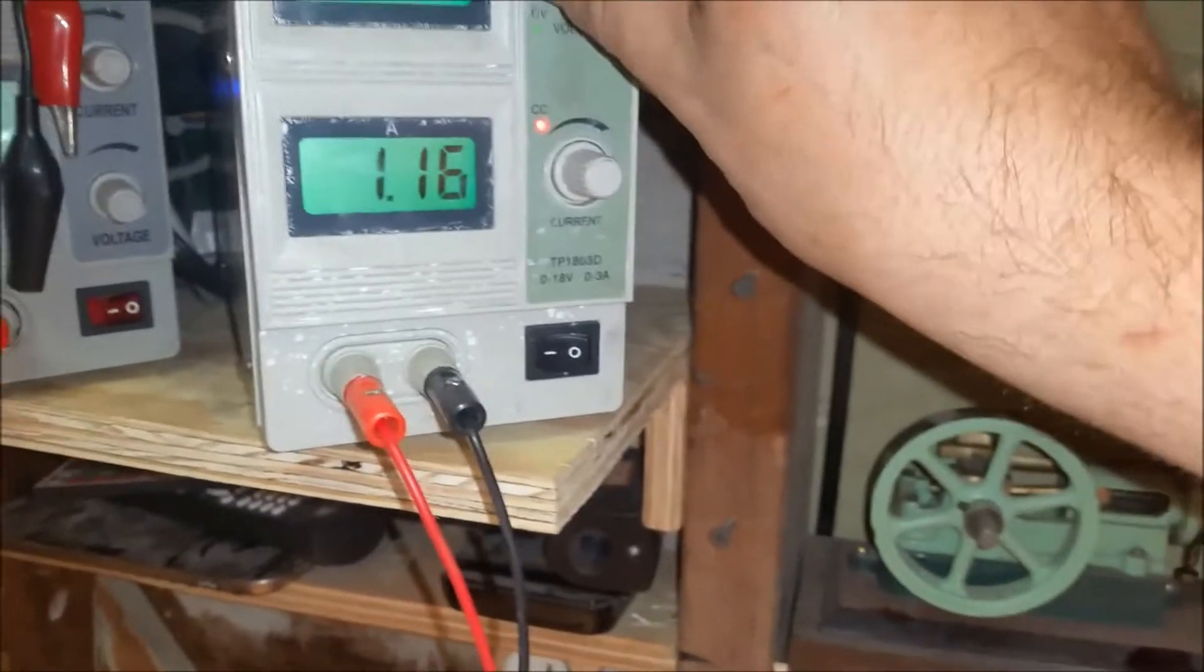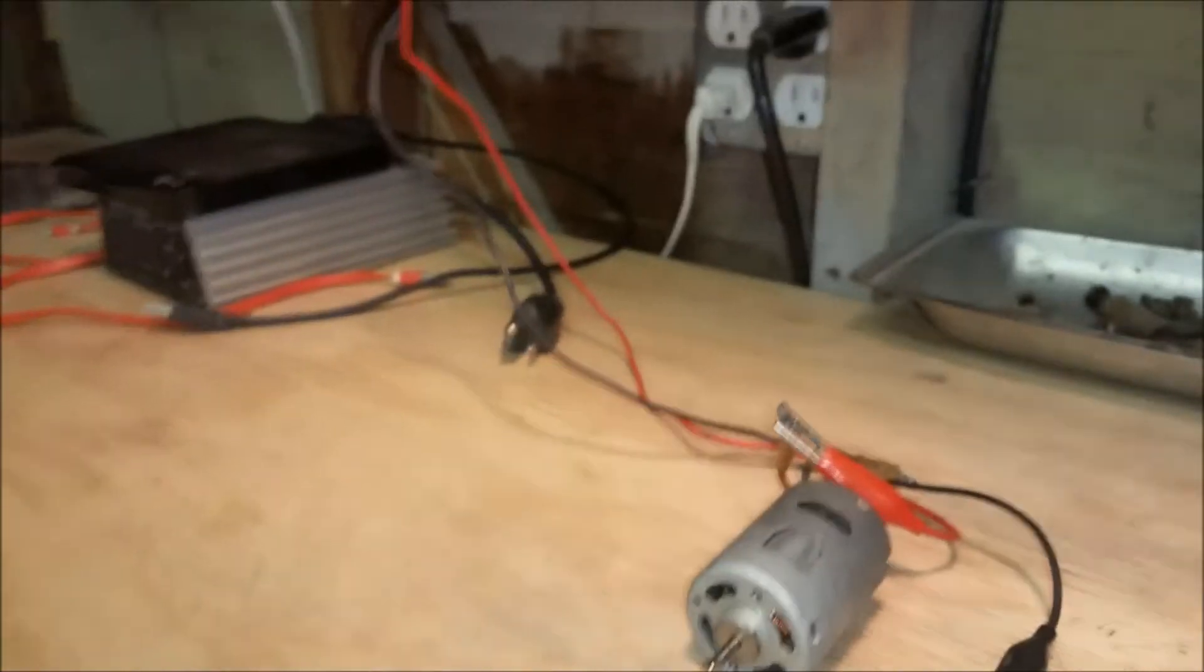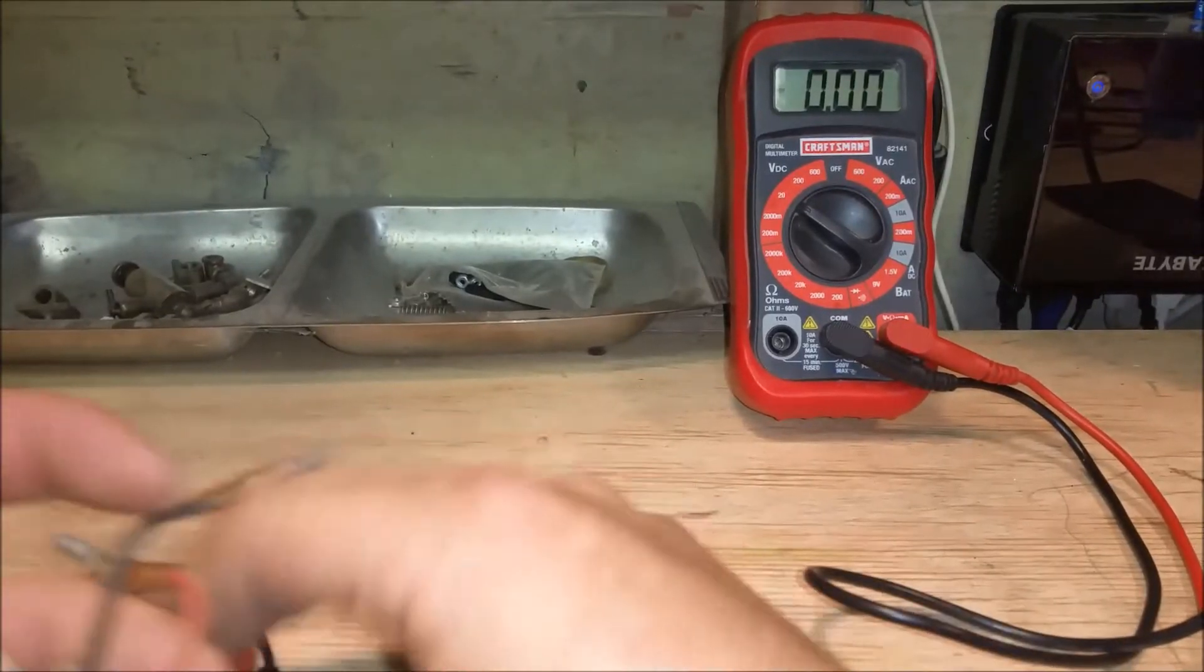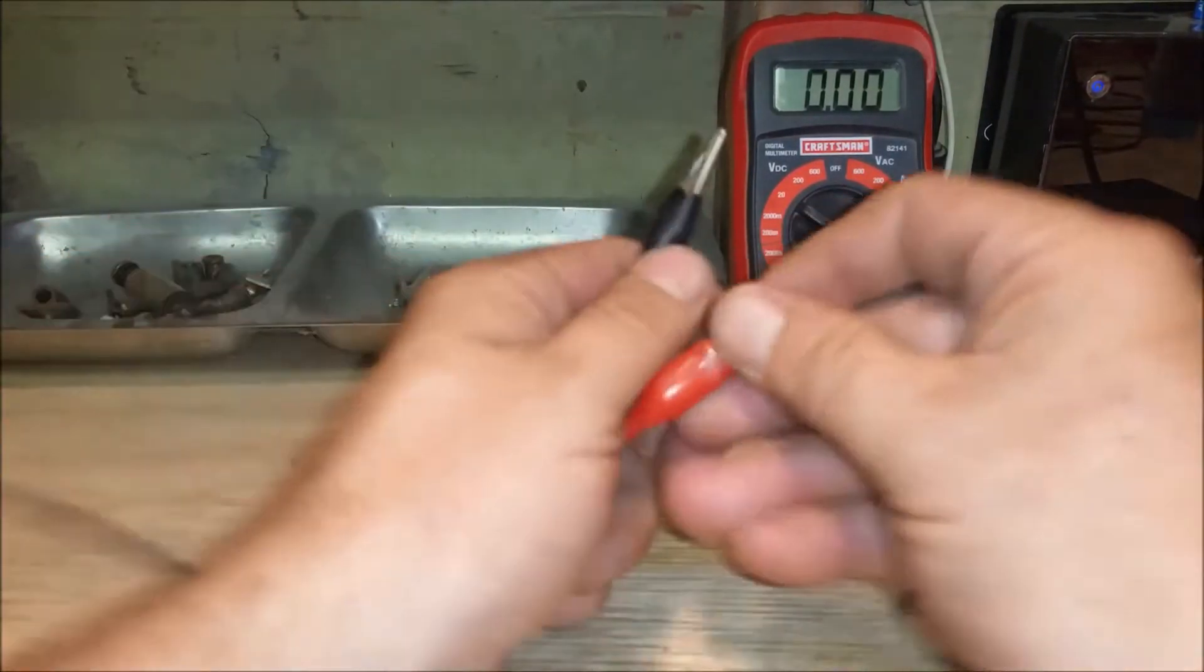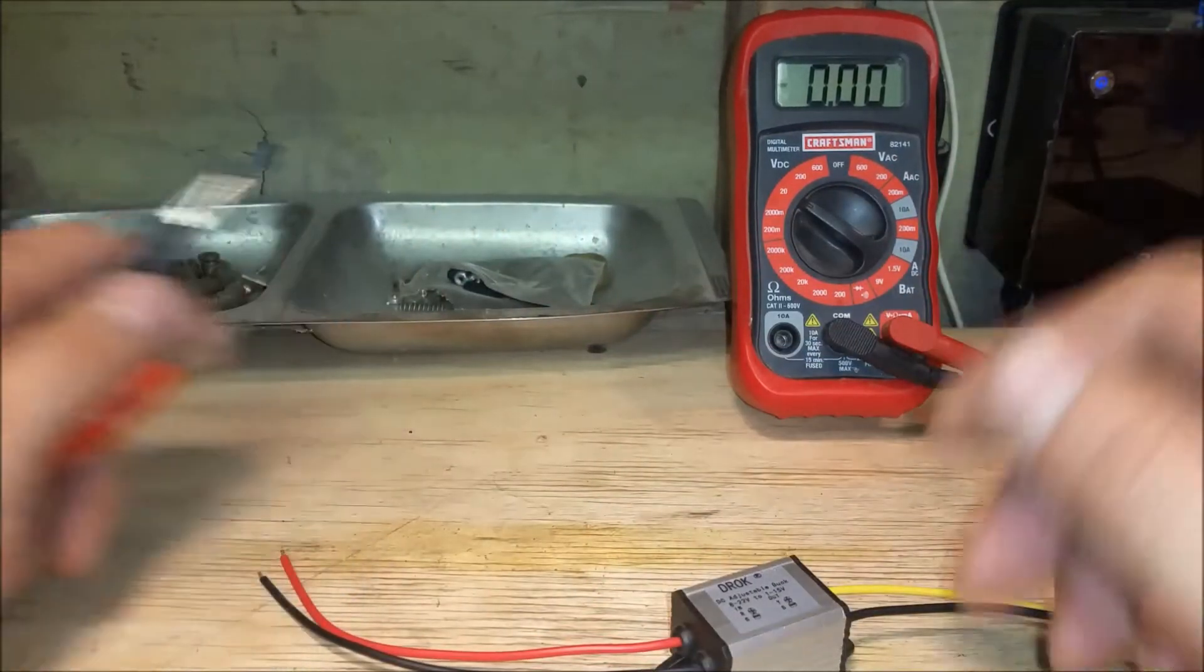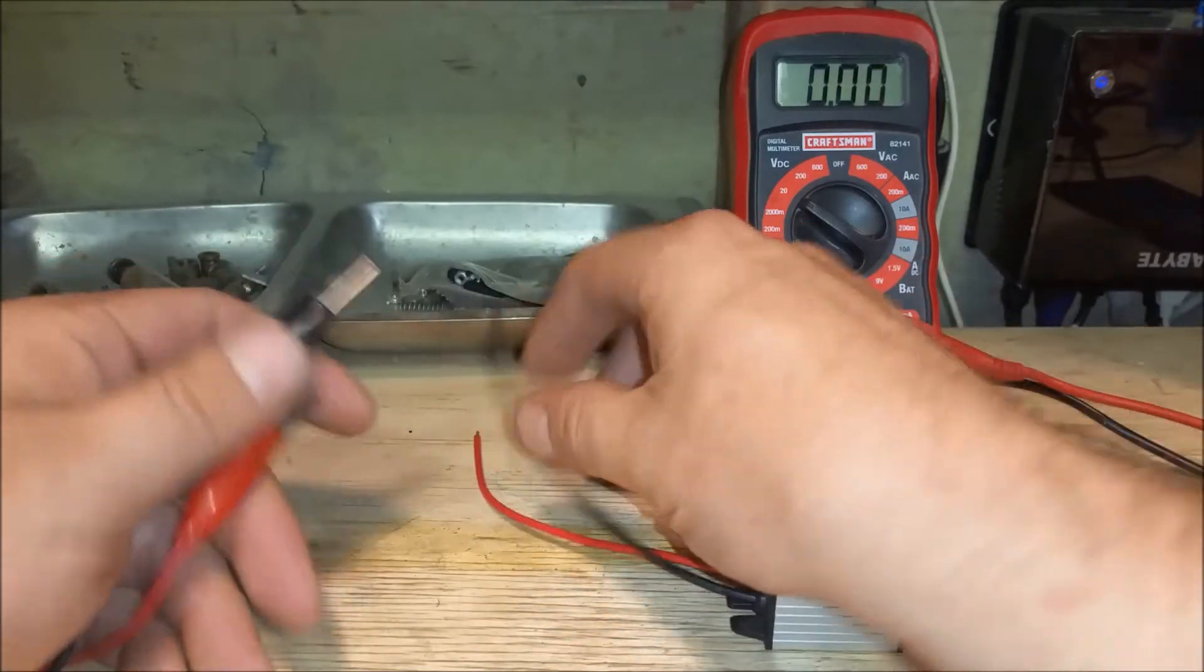All right, we'll bring this down. We'll unhook the motor here. So now I've just got the voltage set at 12.3 volts here. Here's the leads. I don't know what the setting is at right now, but we'll go ahead and hook this up.